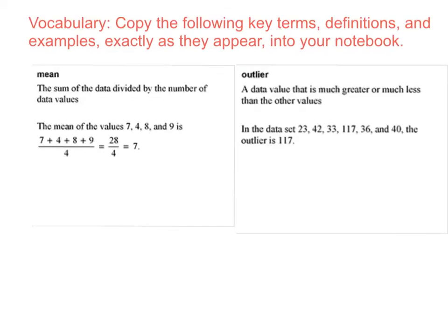Copy the following key terms, definitions, and examples exactly as they appear into your notebook. Mean is the sum of the data divided by the number of data values. The mean of the values 7, 4, 8, and 9 is 7.